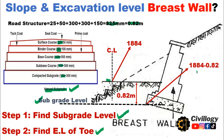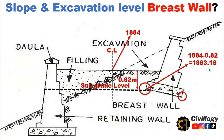As you can see here, 18884 is the center line level, which is taken as the reference. If you subtract the road structure depth of 0.82 m, it becomes 18883.18, which is the excavation level of the toe. That's how in Step 2 you can find the excavation level of the toe.